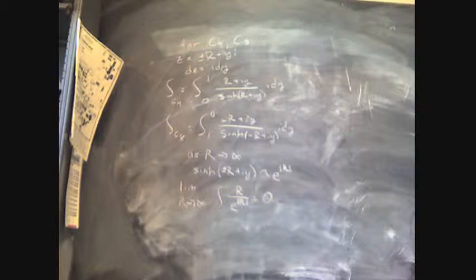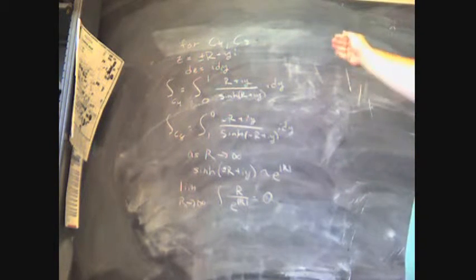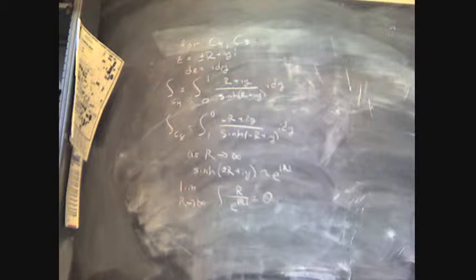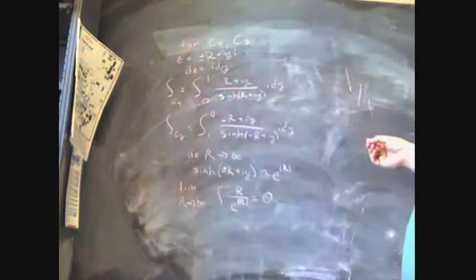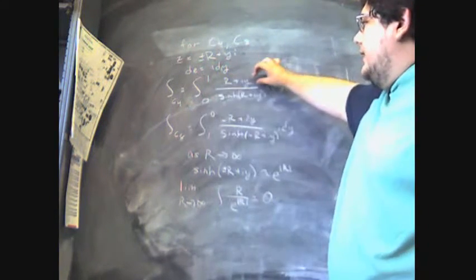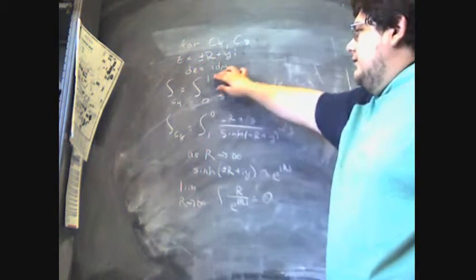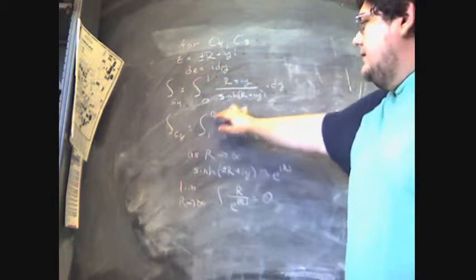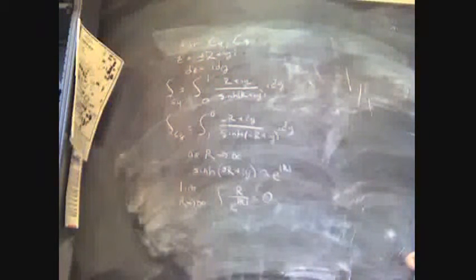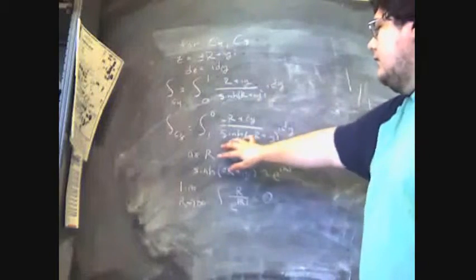Okay so let's deal with our vertical segments first which were c4 and c8. Where basically we were going up or down along the imaginary axis or in the direction of the imaginary axis. So we had some real plus or minus r plus yi. And then we're going to be integrating along our path y. So for c4 we plug in our r plus iy for z. Our dz would become i dy. And we would be integrating from zero to one as we're going up. And then for c8 it would be minus r. And then we would be integrating from one to zero since we're going downward.